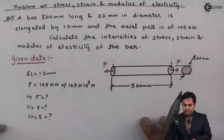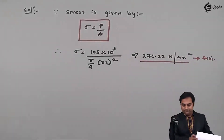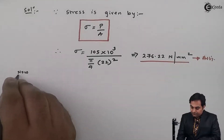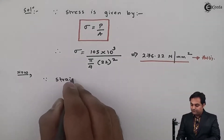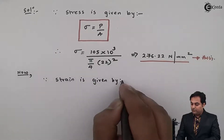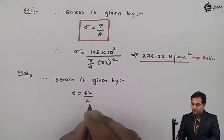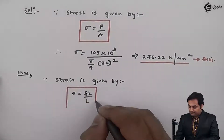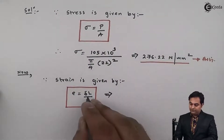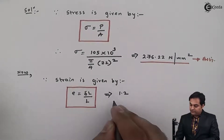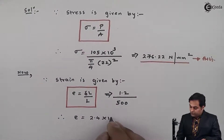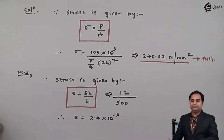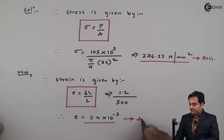Next, we calculate strain. Strain is given by the formula: strain = change in length / original length. The change in length is 1.2 mm and the original length is 500 mm. Substituting these values, strain comes out to be 2.4 × 10⁻³. Strain is a dimensionless quantity and has no units.